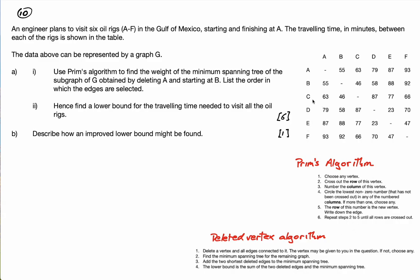Be careful what he's doing here. He's saying first we're deleting A, so for Prim's algorithm we have to assume that A has been deleted. Then he says use Prim's algorithm to find the weight of the minimum spanning tree of the subgraph of G obtained by deleting A and starting at B. So we're basically doing Prim's algorithm for B to F, that's the subgraph.